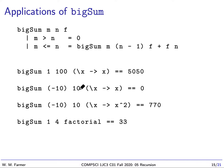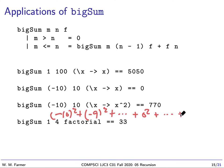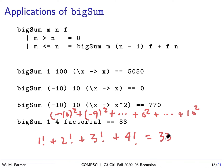Here we're adding up from minus 10 to 10 the identity function, which should be 0 because the negatives cancel. If we add up from minus 10 to 10 the squares, we get 770 — that's (-10)² + (-9)² + ... + 0² + ... + 10², which adds up to 770. And if we do big sum from 1 to 4 using the factorial function, that's 1! + 2! + 3! + 4!, which equals 33. So you see, big sum is quite useful.